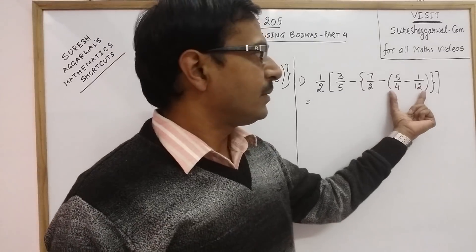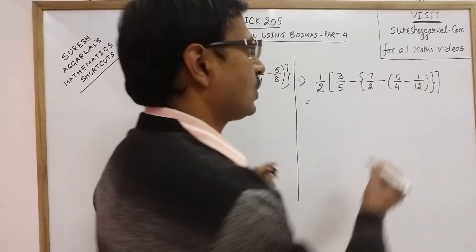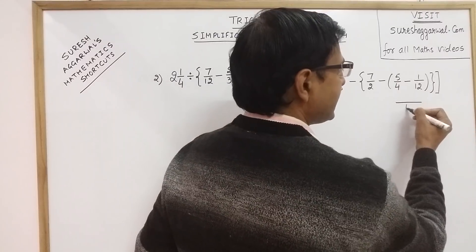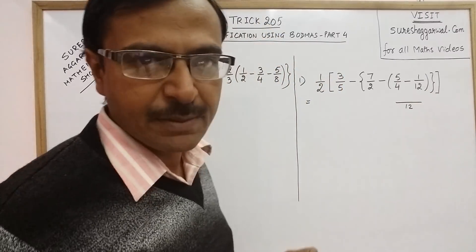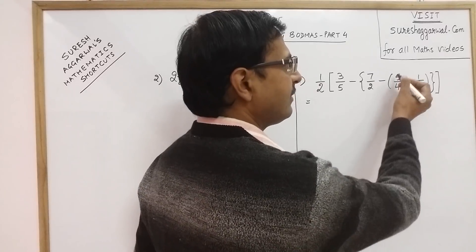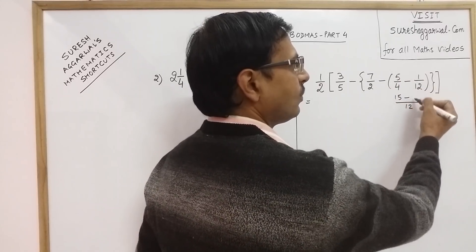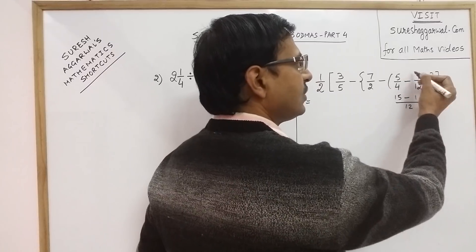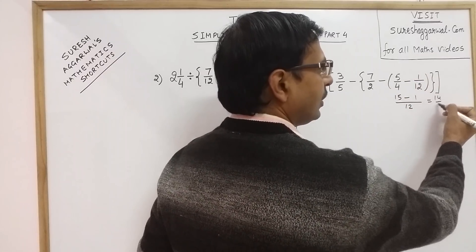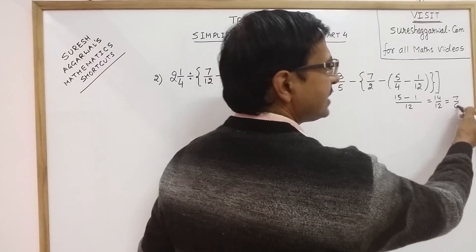I will start with the simple bracket first. Here we have LCM as 12 — 4 and 12 give LCM of 12. So 12 divided by 4 is 3, giving 3 × 5 = 15, minus 1. This bracket solves and comes out to be 7/6.